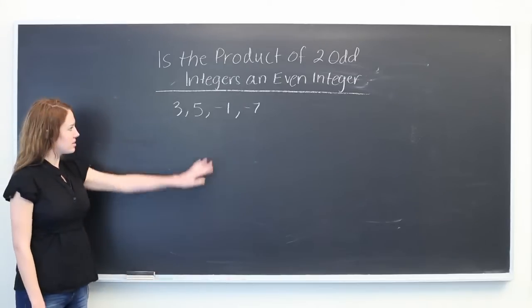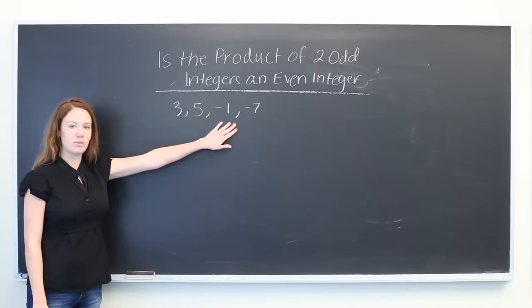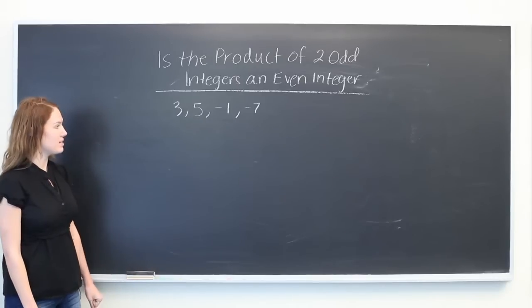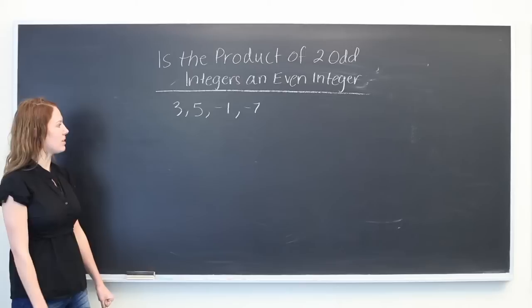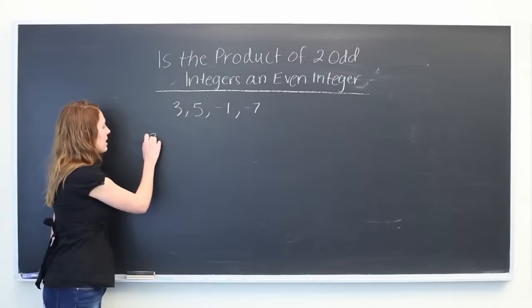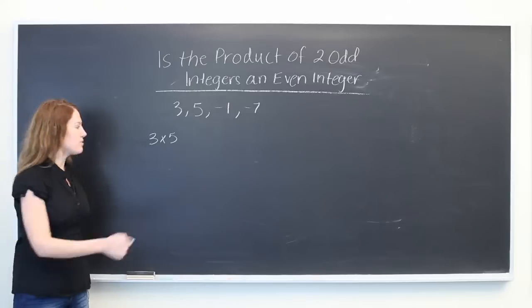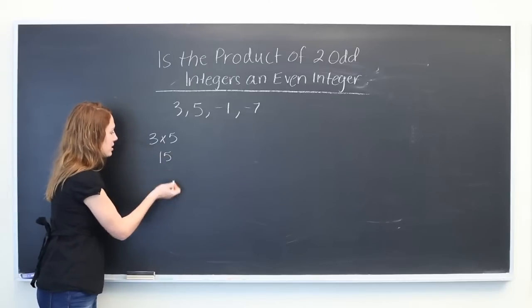Let's look at the product of different combinations of two of these values and see if the product is either odd or even. So first, let's do 3 times 5. 3 times 5 is 15. Odd.